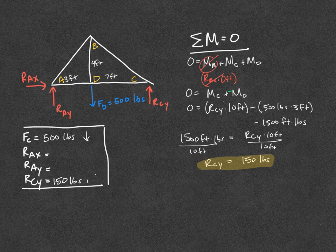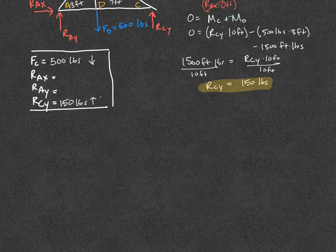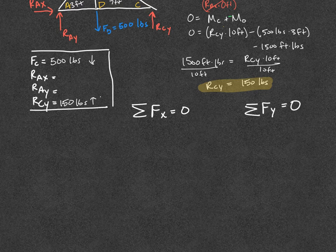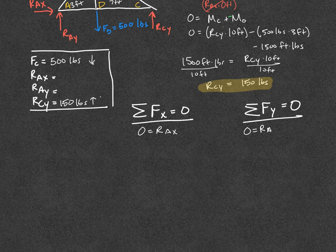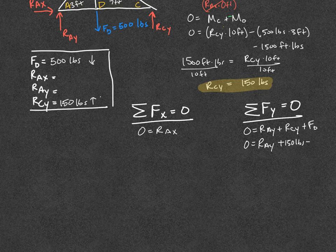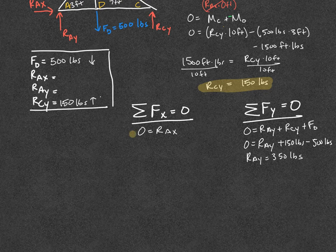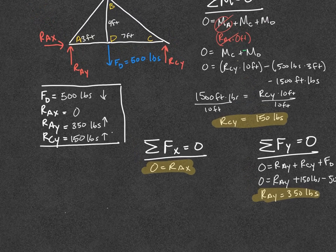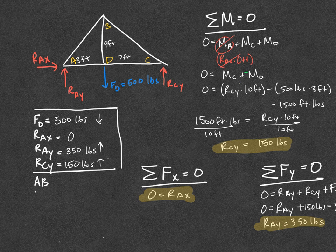So 150 pounds positive in the Y direction is up — I note that on my chart. Next I move on to the forces in X and Y. In the X direction I have RAX, and that's it. In the Y direction I have RAY, RCY, and the force at point D. RCY is 150 pounds; FD is negative 500 pounds because it's going down. Solving for RAY, I get 350 pounds positive, going up. Now I need to solve for my internal forces — the forces along members AB, AD, BC, and CD — so I make a table and solve for each individually.